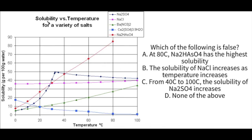Our graph shows solubility versus temperature for a variety of salts. Solubility is on the vertical axis, temperature in Celsius is on the horizontal axis, and the key tells you which colors correspond to which substance. The question asks: which of the following is false? A: at 80 degrees Celsius, Na2HAsO4 has the highest solubility. B: the solubility of NaCl increases as temperature increases. C: from 40°C to 100°C, the solubility of Na2SO4 increases. Or D: none of the above.